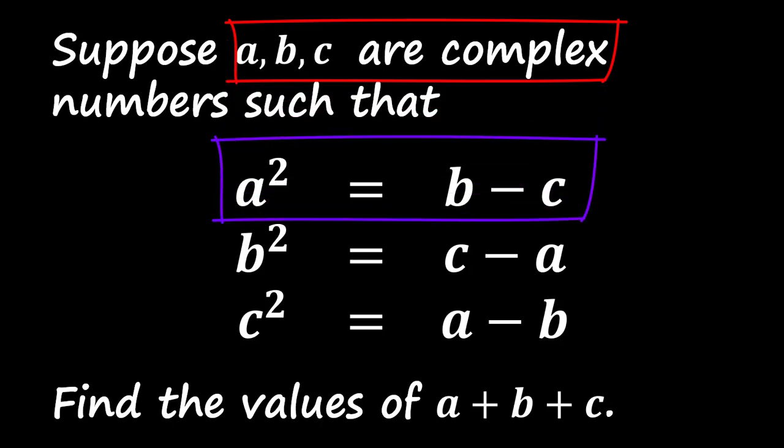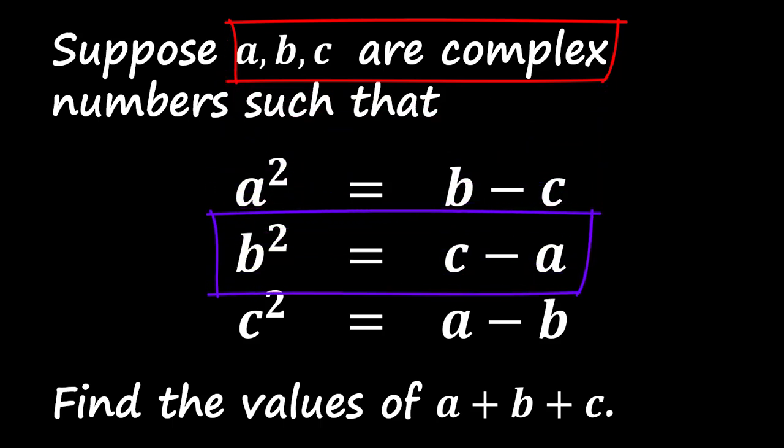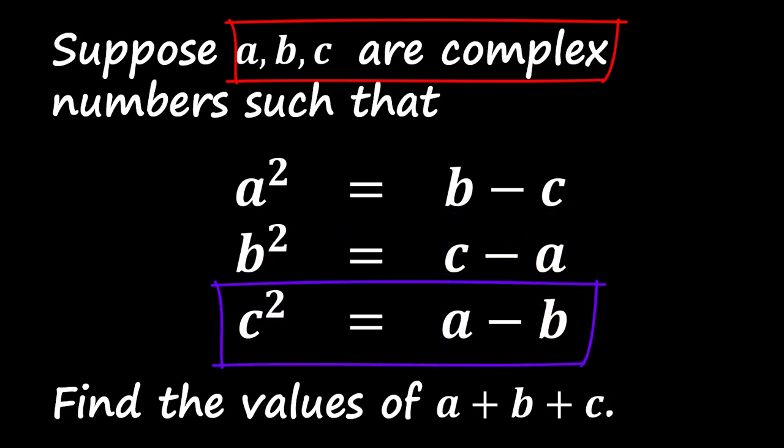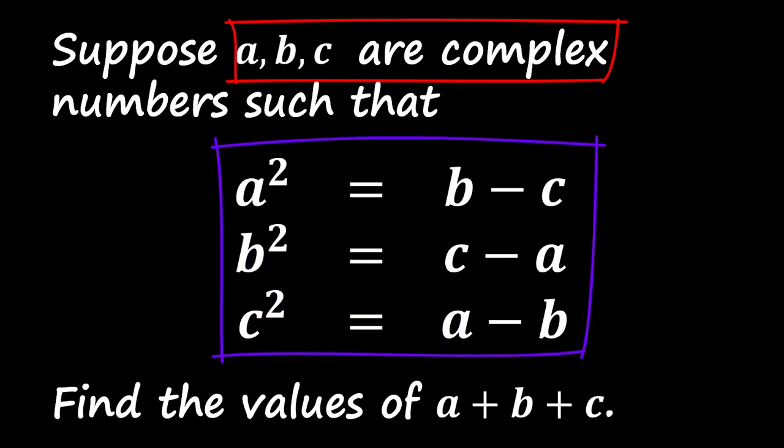A squared equals B minus C, B squared equals C minus A, and C squared equals A minus B. Our goal is to find the possible values of the sum of A, B, and C.